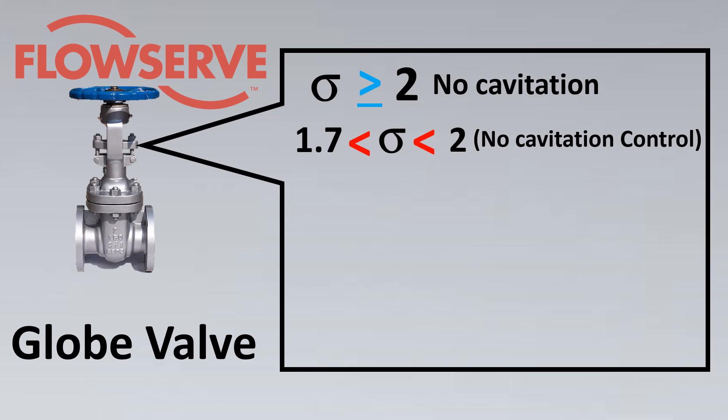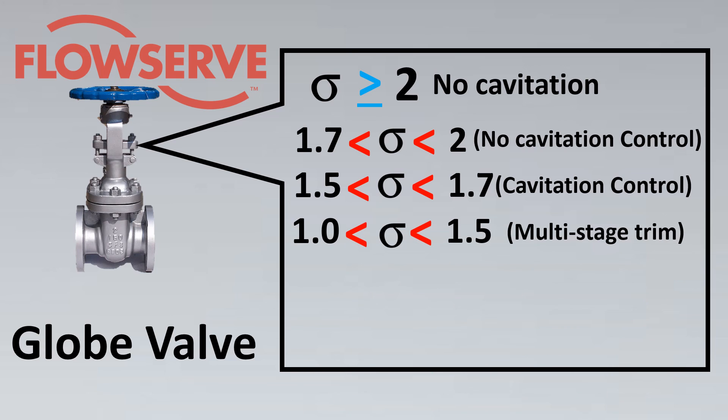If your cavitation index is between 1.7 to 2, there is no special cavitation control that the vendor recommends - this is like our incipient cavitation. But when the value is between 1.7 to 1.5, some cavitation control would be required, like having a hardened trim material could be sufficient. When you're getting to the range between 1 to 1.5, you might require a multi-stage trim. This is something serious - there are chances of very severe cavitation happening here. And finally, if it goes below one, then flashing is occurring.